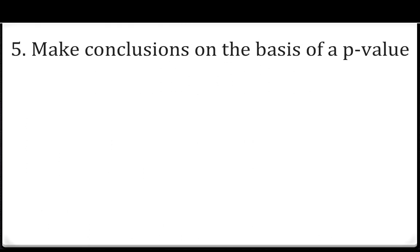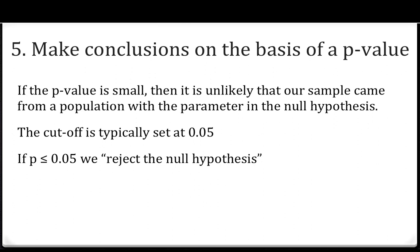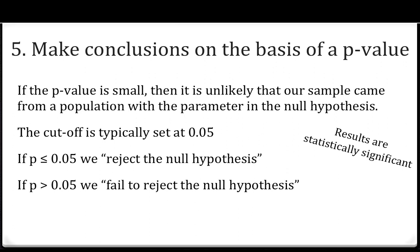The fifth learning objective is making conclusions on the basis of a p-value. If the p-value is small, then it is unlikely that our sample came from a population with the parameter in the null hypothesis. The cutoff is typically set at 0.05 — if there's less than a 5% chance that a population with the given parameter would produce the observed sample statistic, we say it is unlikely that our sample came from that population. If the p-value is less than or equal to 0.05, we reject the null hypothesis and the results are statistically significant. If the p-value is greater than 0.05, we fail to reject the null hypothesis and the results are not statistically significant.